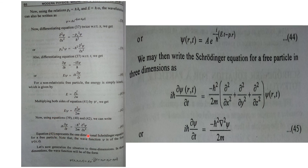We can generalize this, as we only discussed along the x-axis. Generalizing for three axes, we get: i·h-bar·∂ψ/∂t equals minus h-bar²/2m times (∂²ψ/∂x² + ∂²ψ/∂y² + ∂²ψ/∂z²). Instead of writing that sum, they wrote del-squared·ψ. This represents the three-dimensional time-dependent Schrödinger equation.